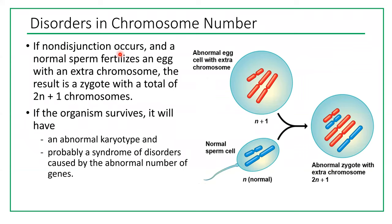If non-disjunction occurs and a normal sperm fertilizes an egg with an extra chromosome, the result is a zygote with a total of 2n plus 1 chromosomes. If the organism survives, it will have an abnormal karyotype and probably a syndrome or disorder caused by the abnormal number of genes. Here is an example: a normal sperm (n) fertilizes an abnormal egg with one extra chromosome, making it n plus 2. When they fuse, the ploidy is 2n plus 1.